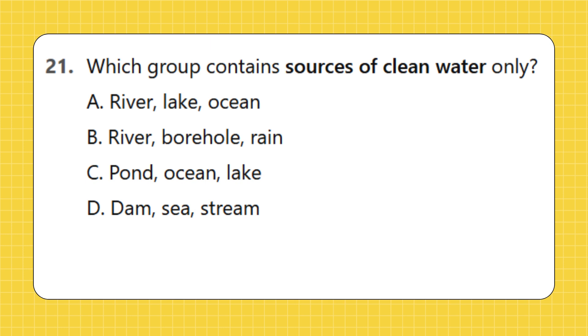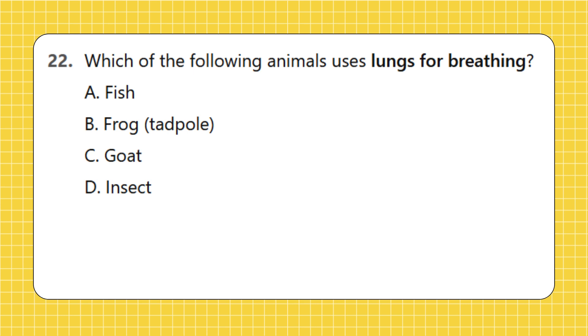Question 21: Which group contains sources of clean water only? A. River, lake, ocean, B. River, borehole, rain, C. Pond, ocean, lake, D. Dam, spring, stream. Question 22: Which of the following animals uses lungs for breathing? A. Fish, B. Frog, tadpole, C. Goat, D. Insect.